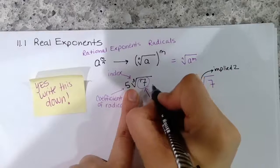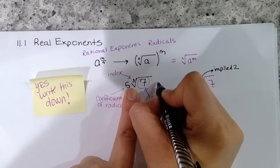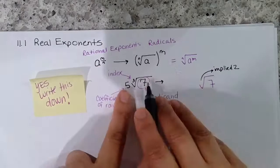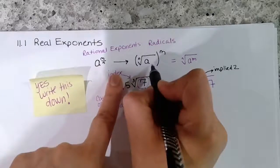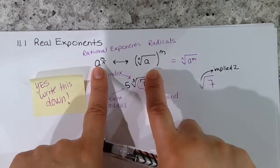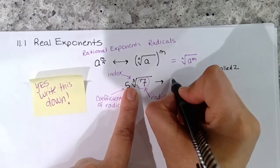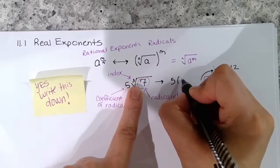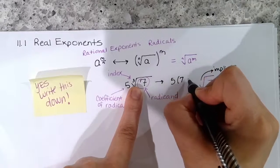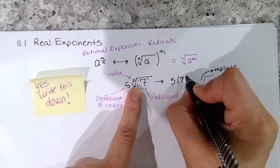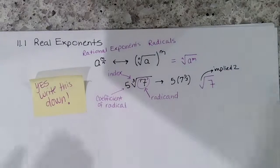Add one more thing to your notes. You can convert between radical and rational notation in both directions. For example, 5 times the seventh root of 7: written back in rational exponent form, 7 inside the radical is 7 to the one-seventh power, so this becomes 5 times 7 to the one-seventh. You can write something with a rational exponent or with radicals, just as you can write a number as a fraction or a decimal.